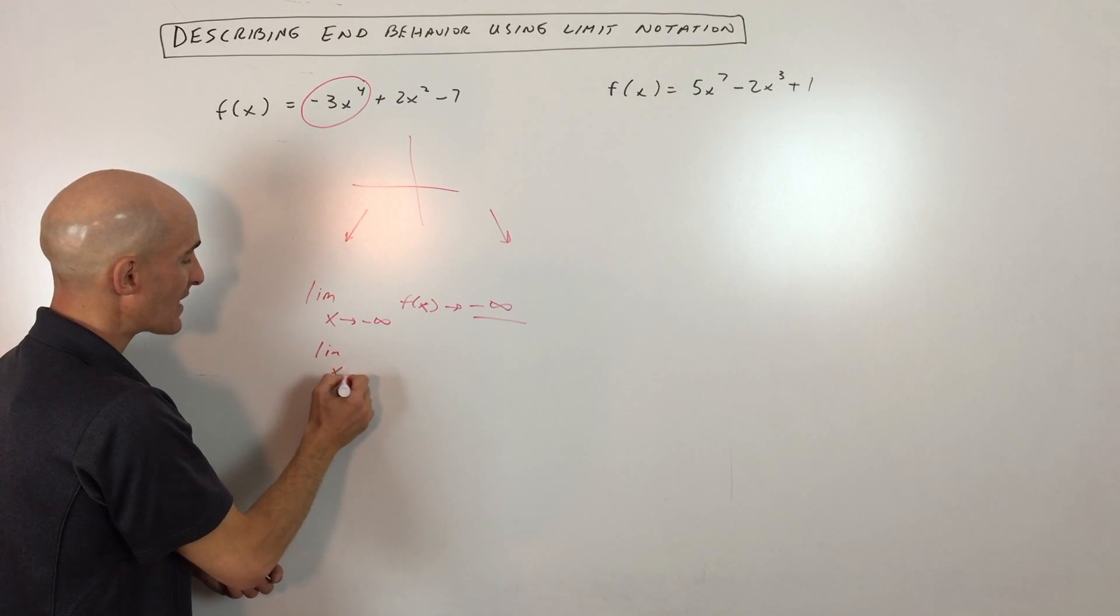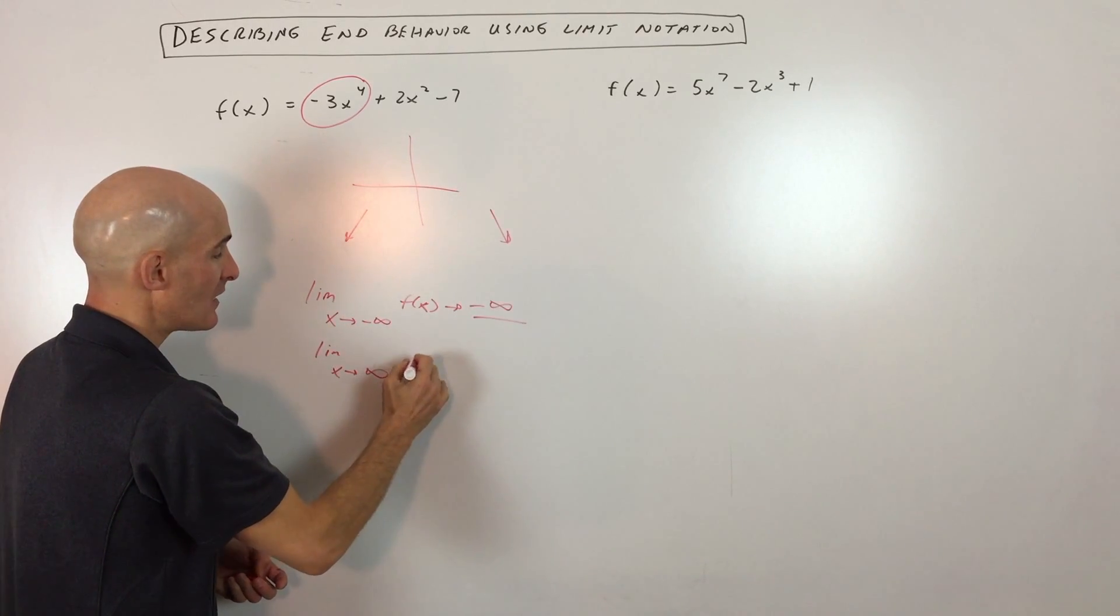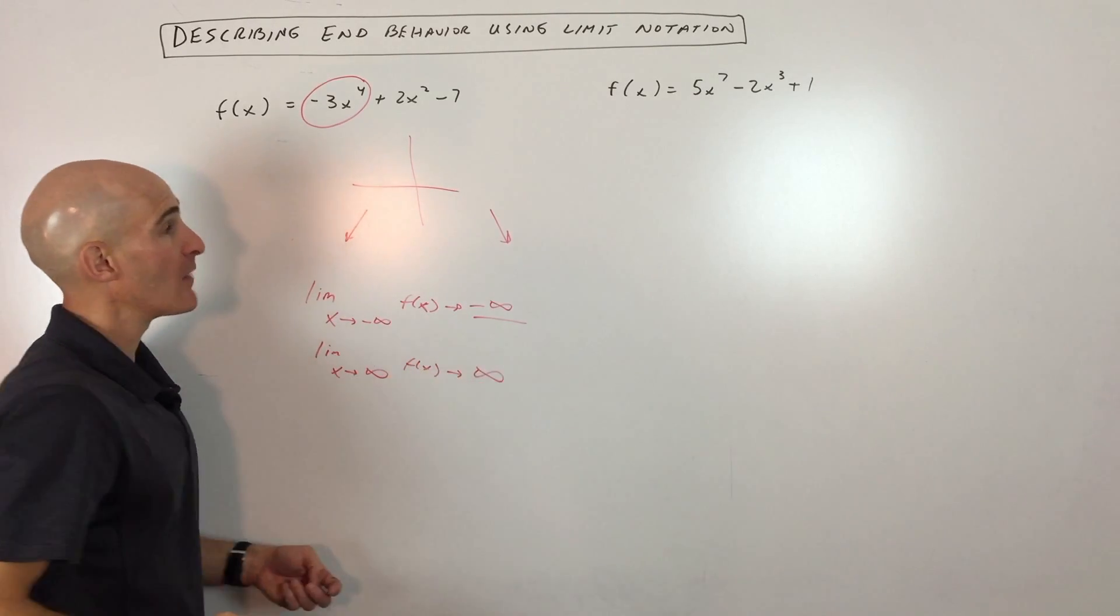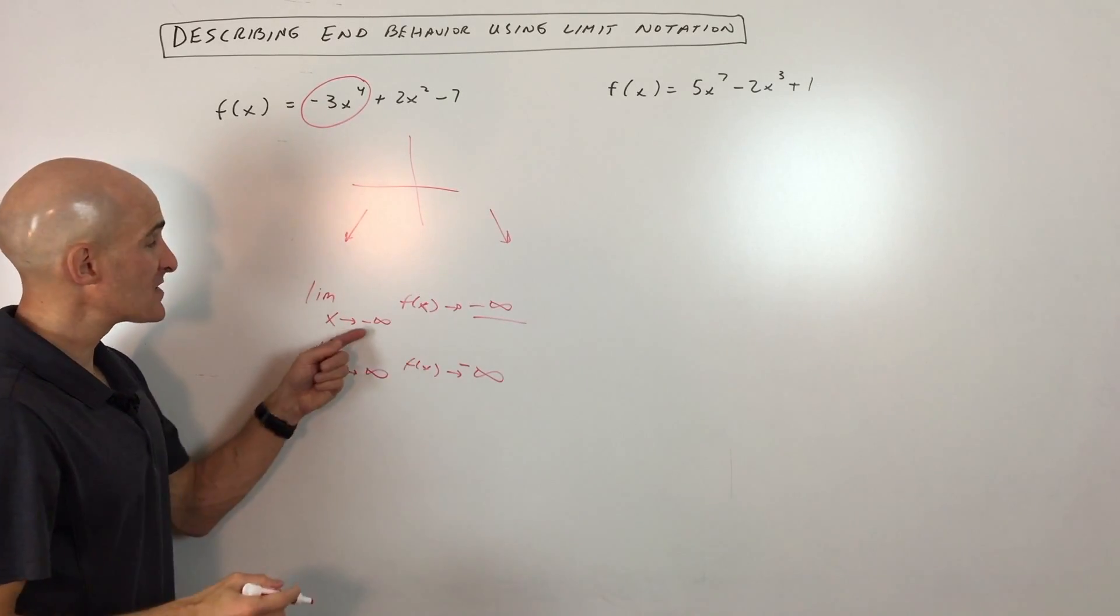If we do the limit as x approaches positive infinity, meaning as we go to the right, f of x is going to approach negative infinity as well because it's going down. So this is the notation.